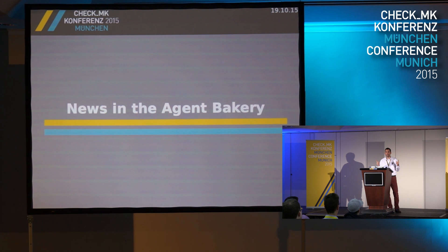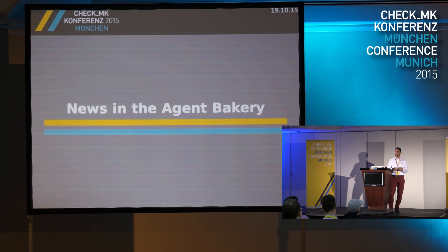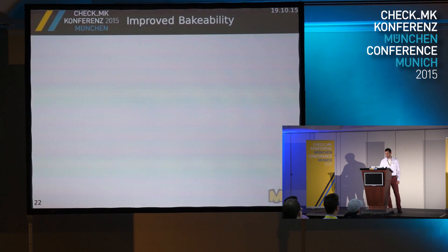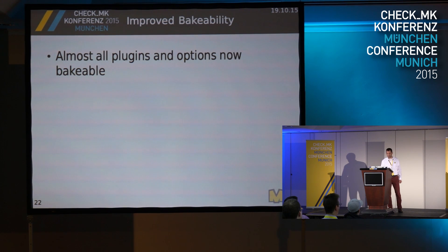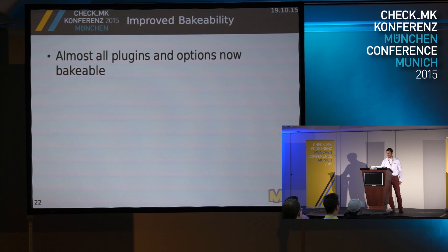Let's talk about the Agent Bakery now. For those who don't know it — in CheckMK you can use agent packages like RPM, DEB packages, MSI packages for Windows, and make them specific. You can have rules for this and say you want a certain safety package and so on, and then you just have your packages afterwards. What's most important is that almost all plugins and options can now be configured — you can say on this group of hosts I want this plugin, and it's automatically baked in. You can also have your custom plugins in those packages.